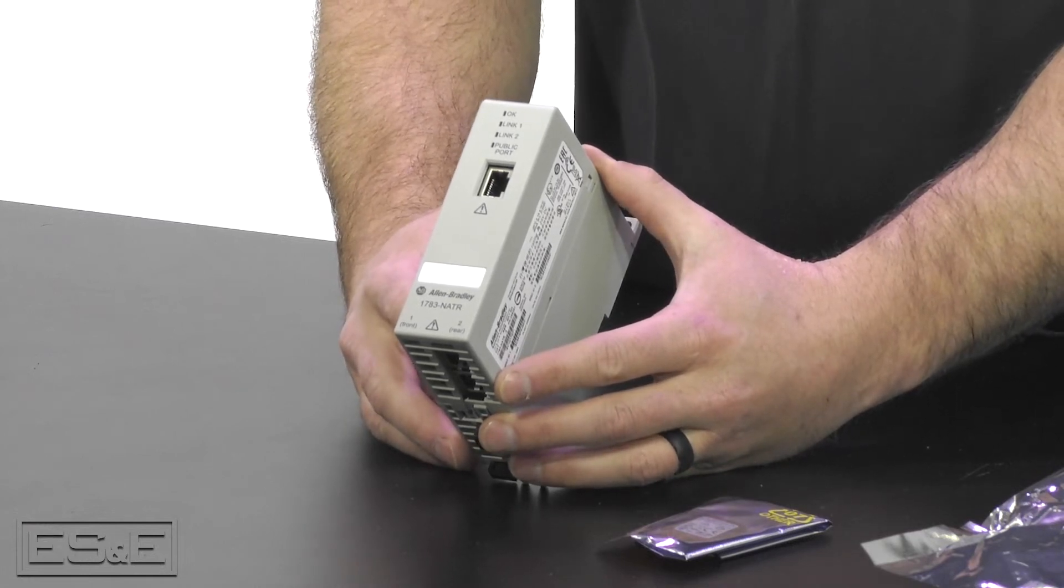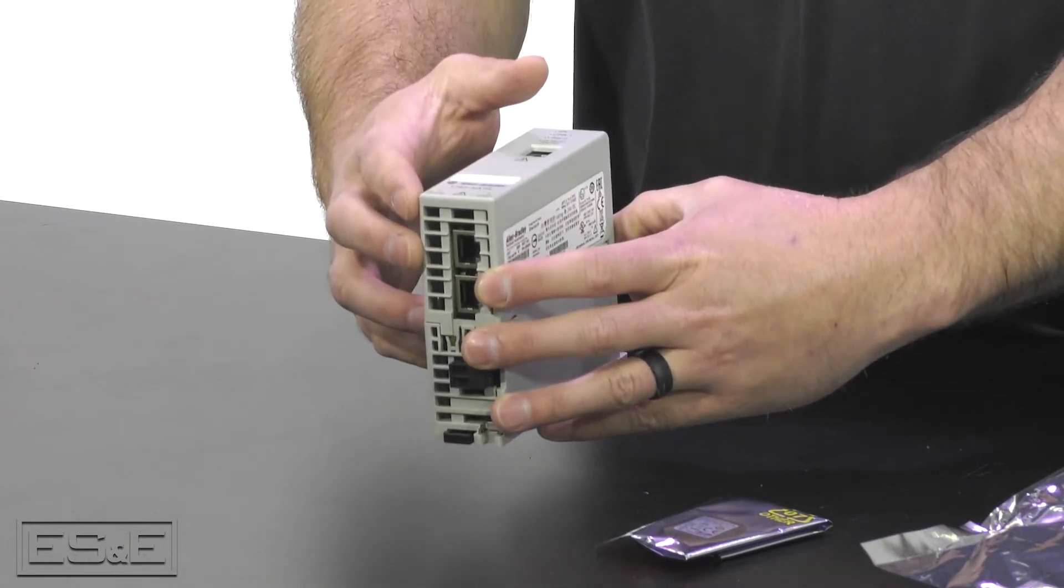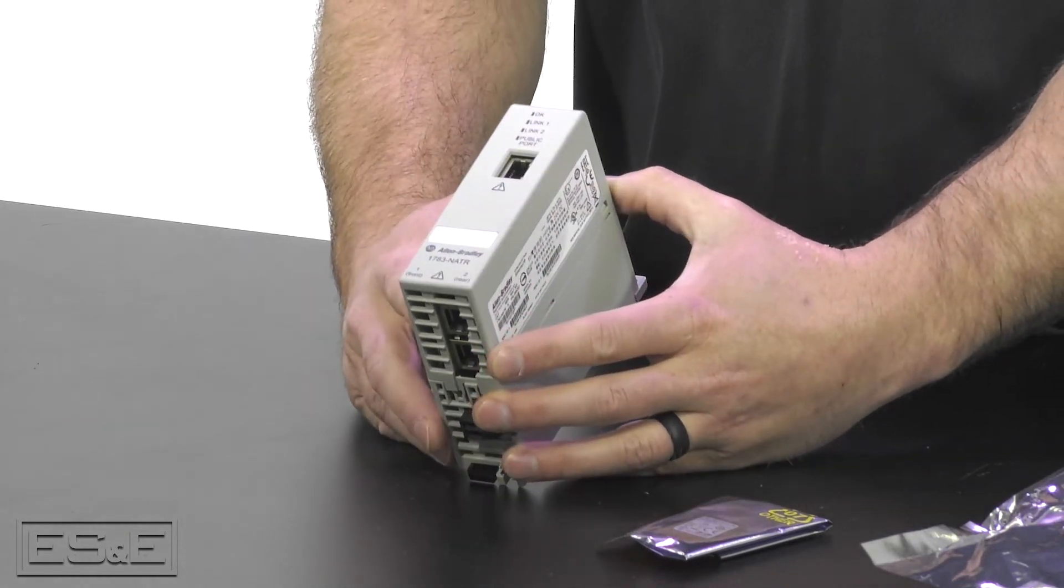The NAT-R has three ethernet ports, one on the front and two on the bottom, but it only has two network interface cards or two NIC cards.